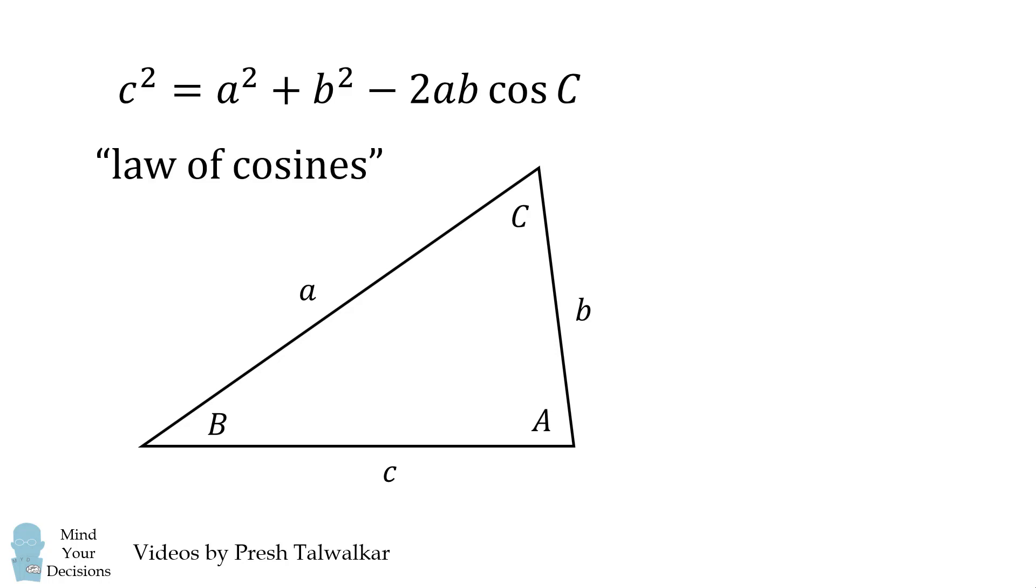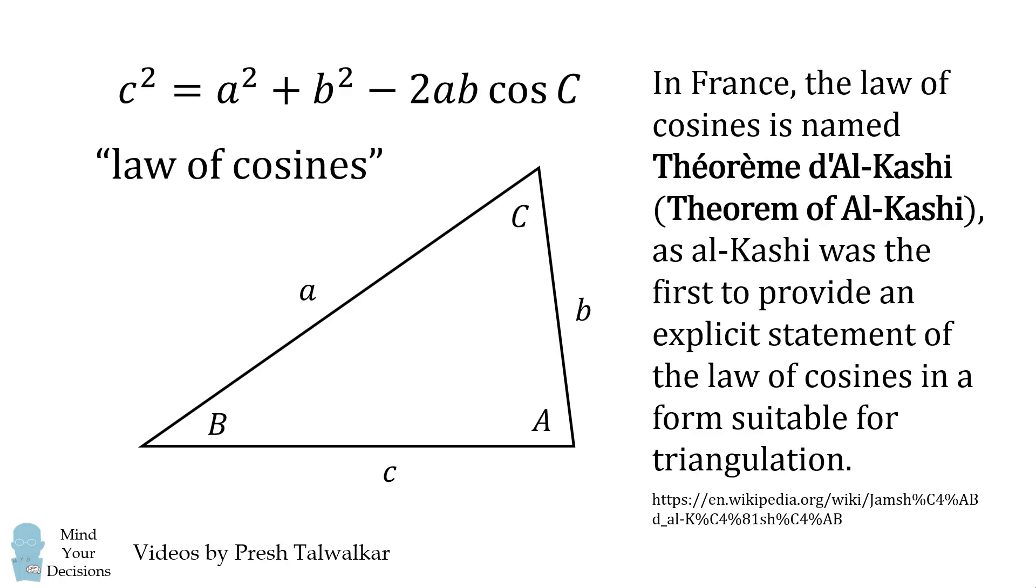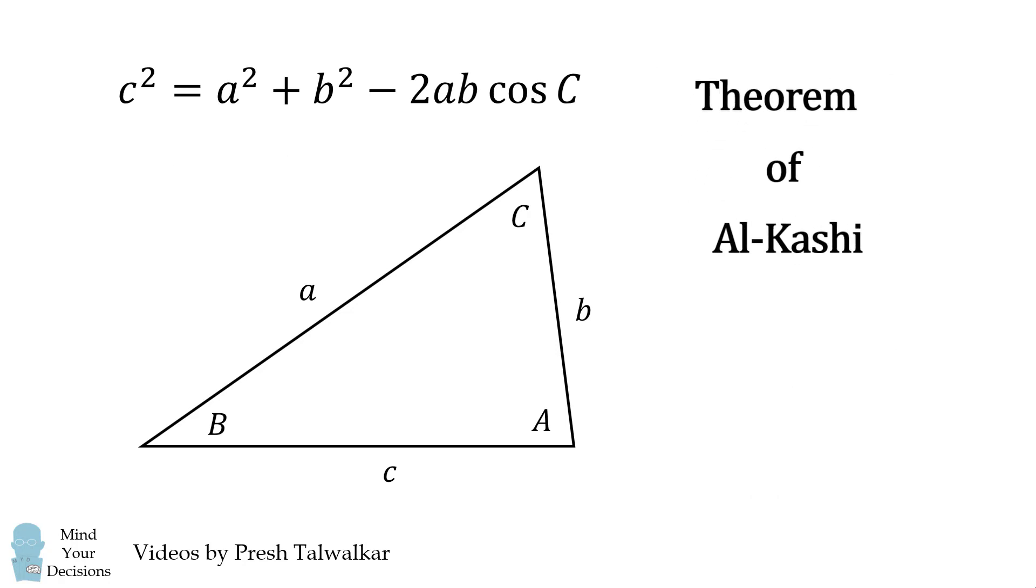But in my research, I found the following interesting fact: In France, the law of cosines is named the theorem of Al-Kashi, as Al-Kashi was the first to provide an explicit statement of the law of cosines in a form suitable for triangulation. I think it would be appropriate to call this the theorem of Al-Kashi or Al-Kashi's theorem, and I'm going to try and do that from now on.